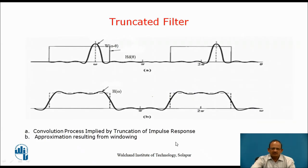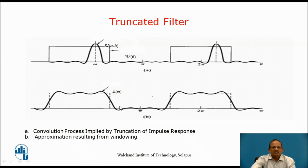If you look at the effect of this truncation on the truncated filter — as we have seen, the actual frequency response H(omega) is the convolution of the desired frequency response hd(omega) with the sinc-like window frequency response W(omega). If you plot h(omega), you will see that it is not exactly equal to the desired frequency response; you will get ripples in the passband as well as in the stopband. Practically, because of truncation, the transition will not be sharp.